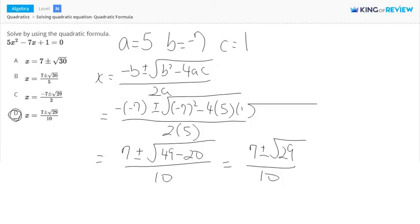Now, let's look at our other options. Option a is pretty close, but it's getting a square root of 30. But as you can see, we got a 49 here, and we subtracted a 20, so we should be getting our 29. And on top of that, it's forgetting about the 2a. So this is wrong.